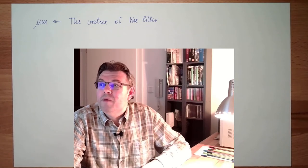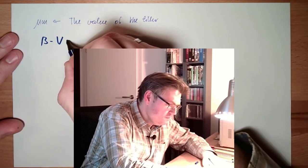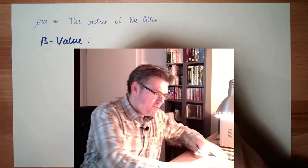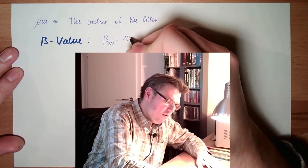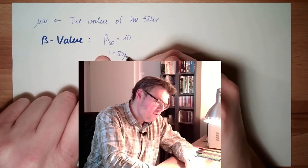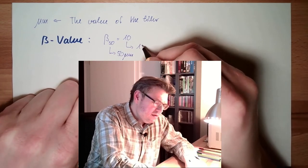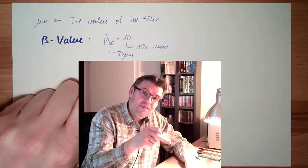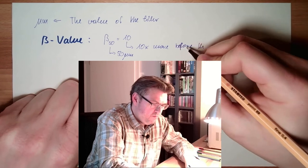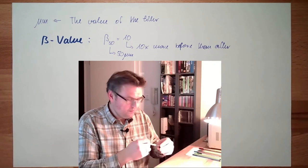The bigger a certain element is, the likelier it is that it will not pass. Therefore, we are using the so-called beta value. The beta value is also given in microns. If there is written, for instance, beta 50 equals 10, then this means a particle of 50 microns.